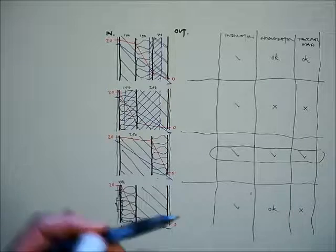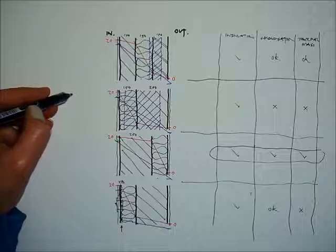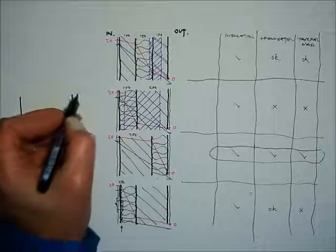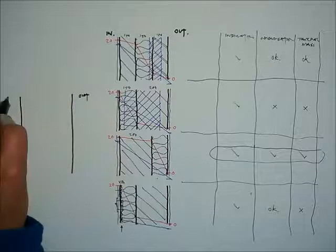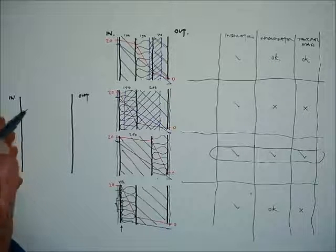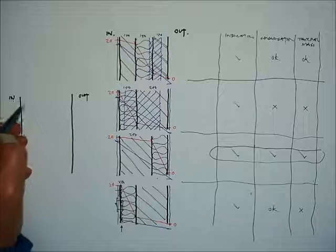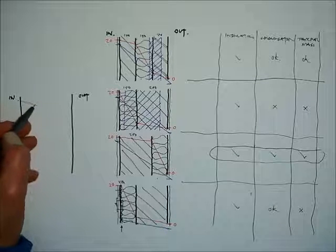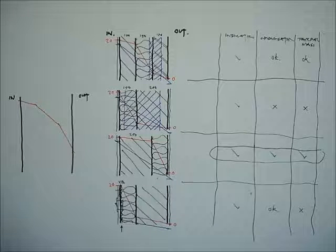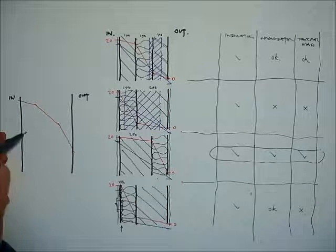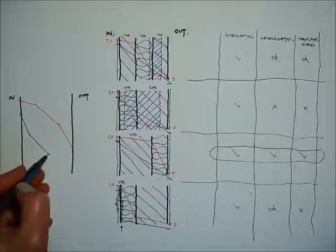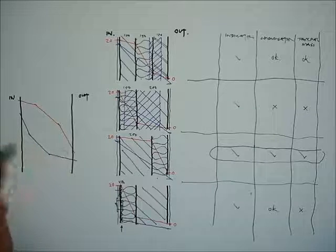So from that diagram, here's some rules of thumb. Here's some wall construction, outside, inside. We want the layers of the construction to force the temperature gradient in this direction and for the layers of construction to force the dew point temperature in this direction away from each other.